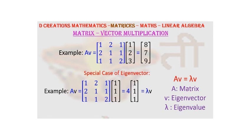So this is how it is written. The equation A into V is equal to lambda V. It is a very important concept. So this is all about matrix vector multiplication. We will meet in the upcoming videos with some more interesting concepts. Thank you.